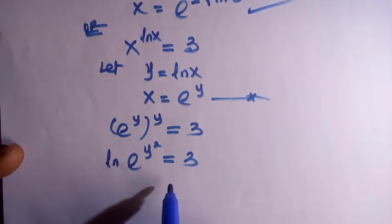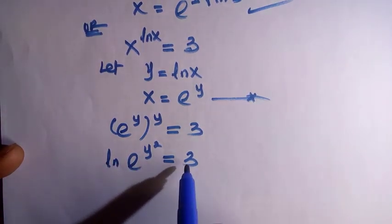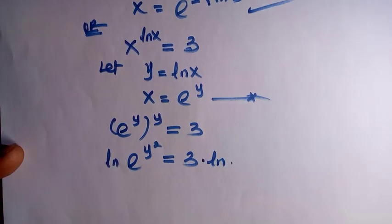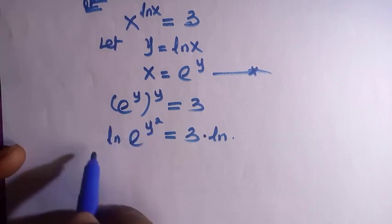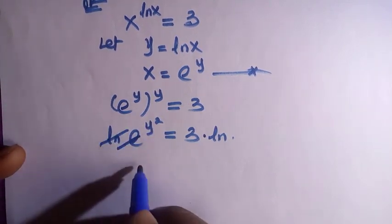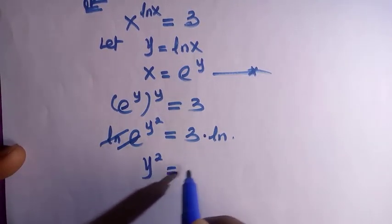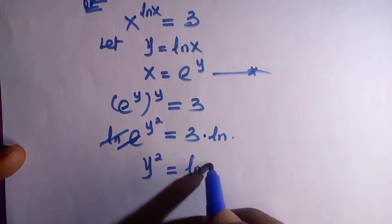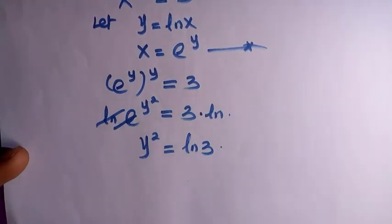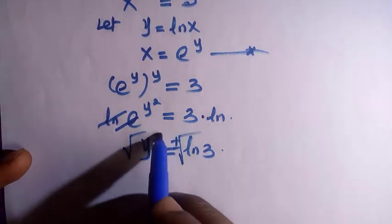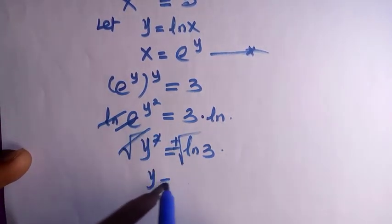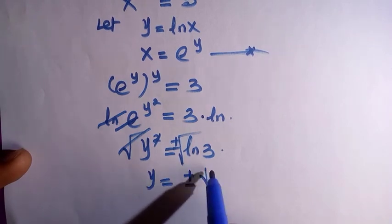If I introduce ln to both sides, ln will cancel here. Therefore we have y^2 equals to ln of 3. Then we take the square root of both sides to get the value of y only, and we have y equals to ±√ln 3.